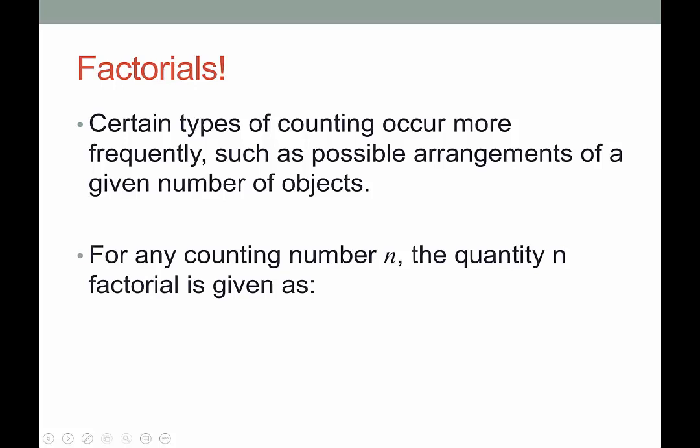For any counting number n, the quantity n factorial is given as - the number of ways, so I said candy bars, I could eat my first candy bar and I would have n options to choose from. Once I consume one, now I have n minus one to choose from, and then n minus two, and so on.